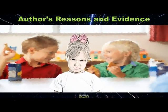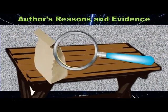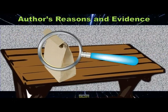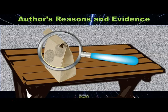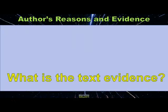Uh-oh! Natalie is sad. Look at the boys in the back eating their lunch, and her lunch is missing. She thinks a little boy took it. So now she's going to look for evidence, and there she finds fingerprints. Now she is going to get some investigation done to find who took her stuff, and she is going to teach us about author's reasons and evidence.